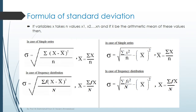In the case of frequency distribution, the standard deviation equals the square root of sigma f times (x minus x-bar) squared divided by capital N, where capital N equals sigma f, which is the total of your frequencies. Here, x-bar equals sigma(fx) divided by capital N.